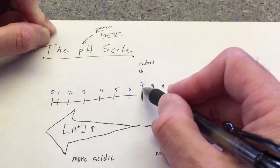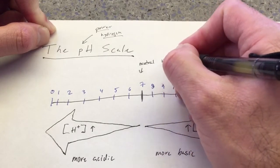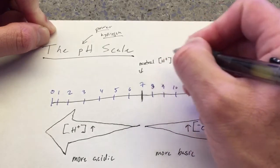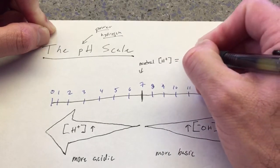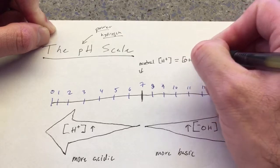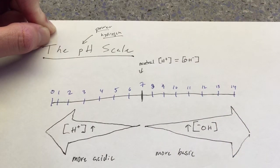And at neutral, at pH 7, this is where the concentration of hydrogen ions equals the concentration of hydroxide ions.